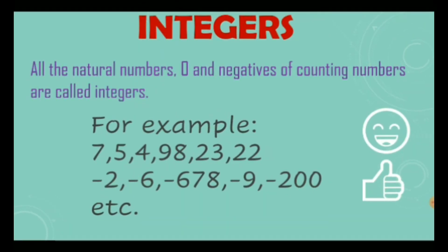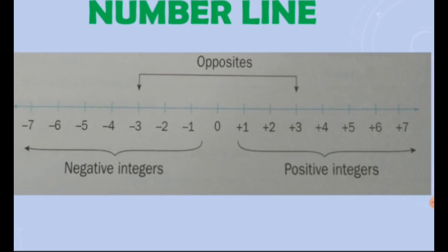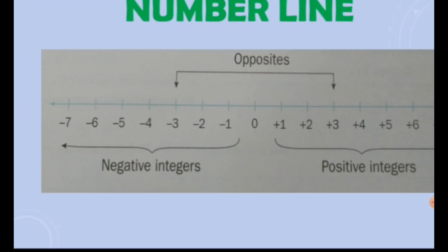Now let's go further and learn number line. Here you can observe the number line and see that 0 is the middle of the number line. At the right side of 0, there are all the positive integers which are natural numbers and at the left side, there are negative integers.